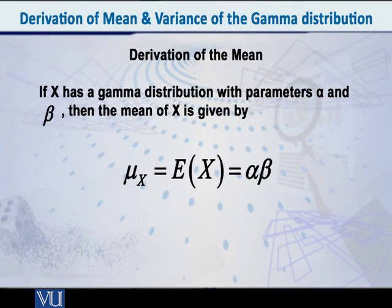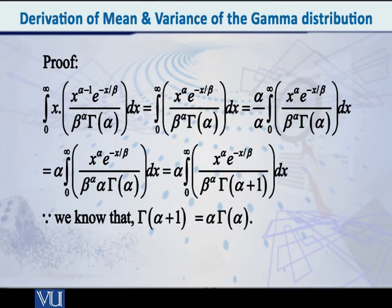Let me derive for you the mean of the Gamma distribution. The mean is the expected value of x, and for any continuous distribution the expected value of x is the integral over the entire domain of x times f(x). So here, E(x) equals the integral from zero to infinity of x times the Gamma distribution PDF — that is, x to the power alpha minus 1, times e raised to minus x over beta, all divided by beta raised to alpha times Gamma(alpha).